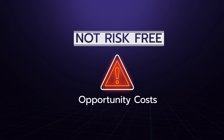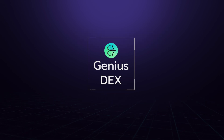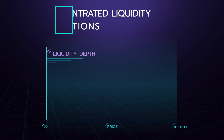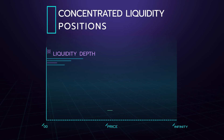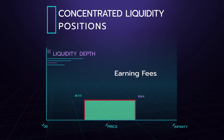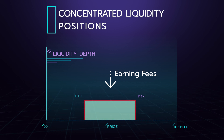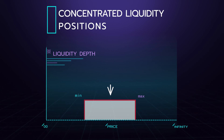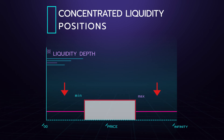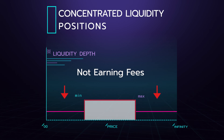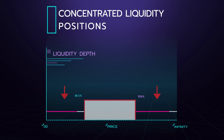For example, on the Genius DEX, which will use concentrated liquidity positions, your position will either be earning fees when trading is occurring within the specific liquidity provider price range, or not. If the trading price moves outside your liquidity provider price range, you will no longer be earning fees, which is a type of loss.